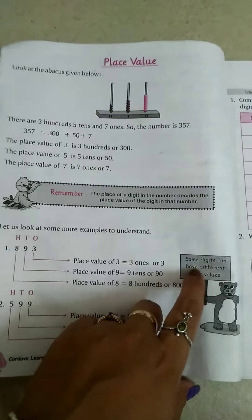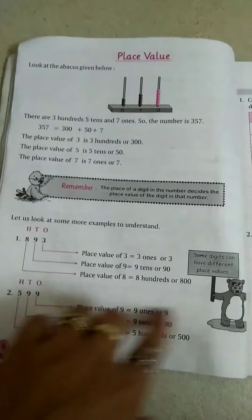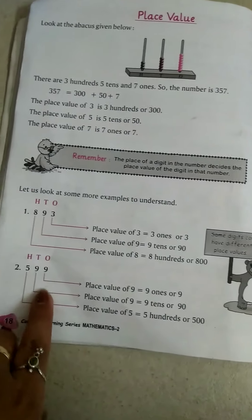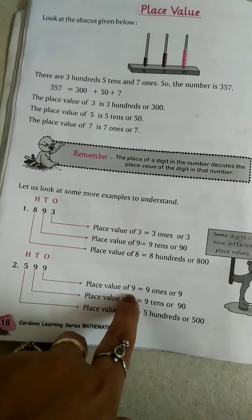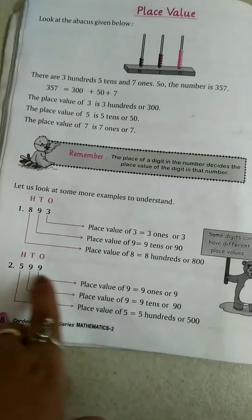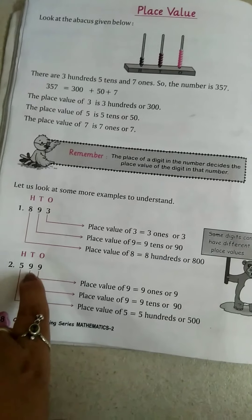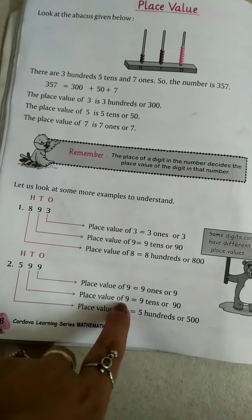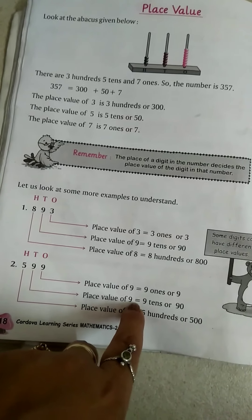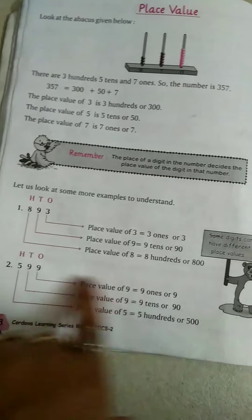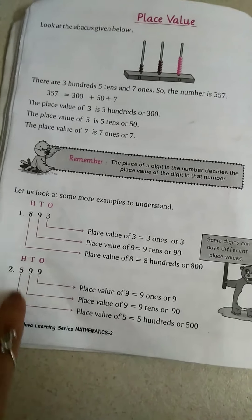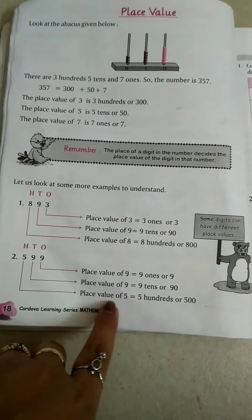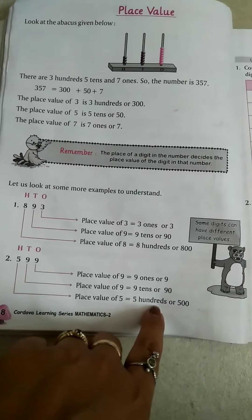Some digits can have different place values. We have already given the example 599. Place value of 9 in the ones place is 9, which is 1 times 9. Here the second 9 is at the place of tens, so place value of that 9 is 90. And 5 is at the place of hundreds, so place value of 5 is 500, which is 5 with two zeros.